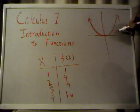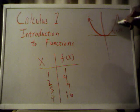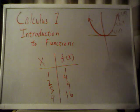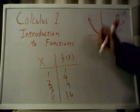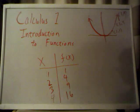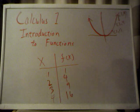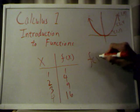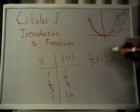You have the points, one, one, two, four, and three, nine, so on and so forth. And then the third way to represent a function is, this is the most common way you'll see it represented in calculus, and that's by using an equation. And so, for this one, it would just be f of x is equal to x squared.